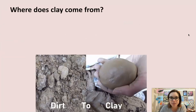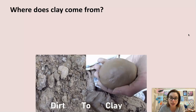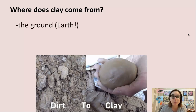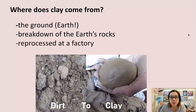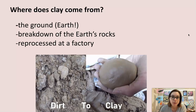So where does clay come from? It starts from dirt and eventually it's turned into clay using various processes. We can get clay from the ground, specifically our earth. It's a result of the breakdown of the earth's rocks, and it's also reprocessed at a factory. So the clay that we use has been reprocessed at a facility.